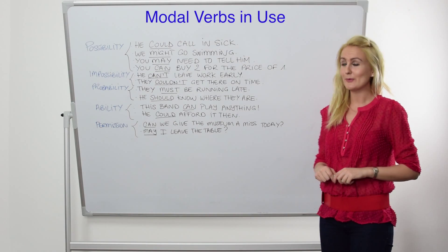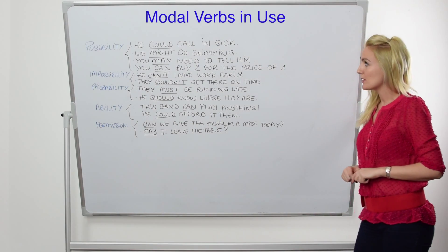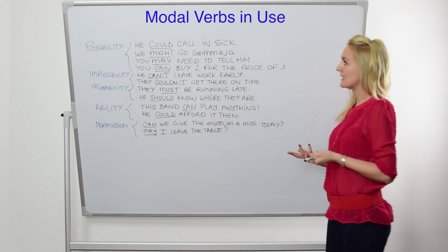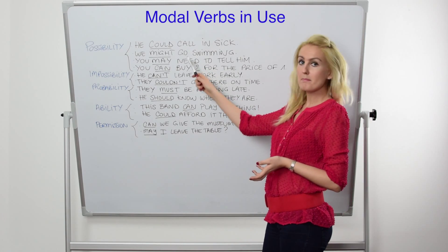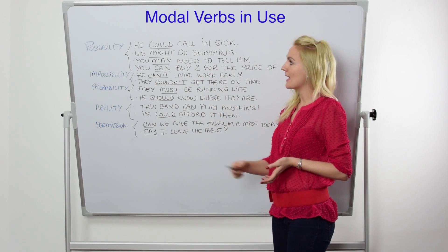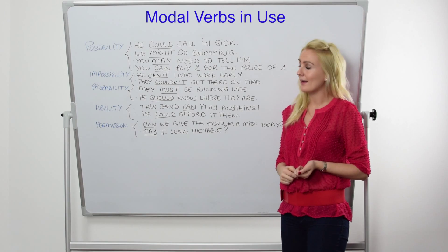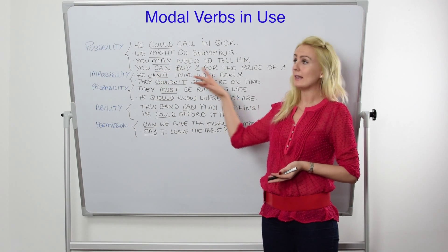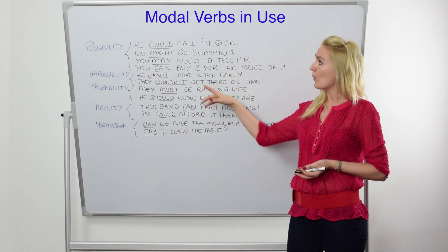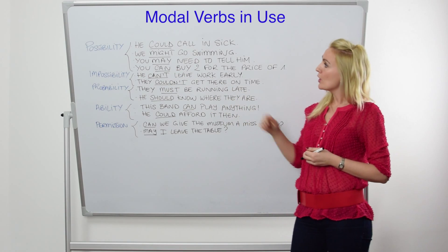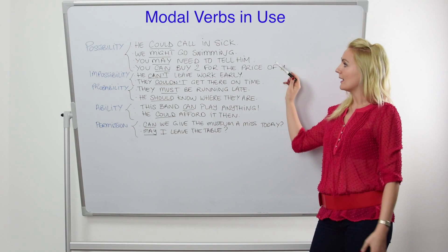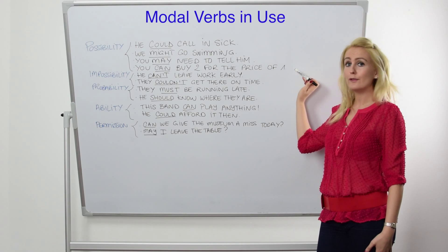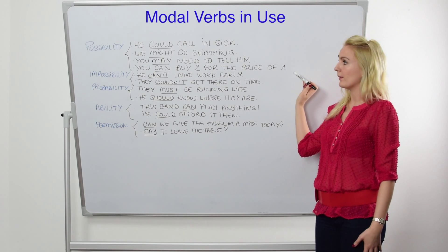Let's look at some examples now. If we wish to express possibility, we can use could, might, may, or can. Our examples are: He could call in sick. We might go swimming. You may need to tell him. You can buy two for the price of one.